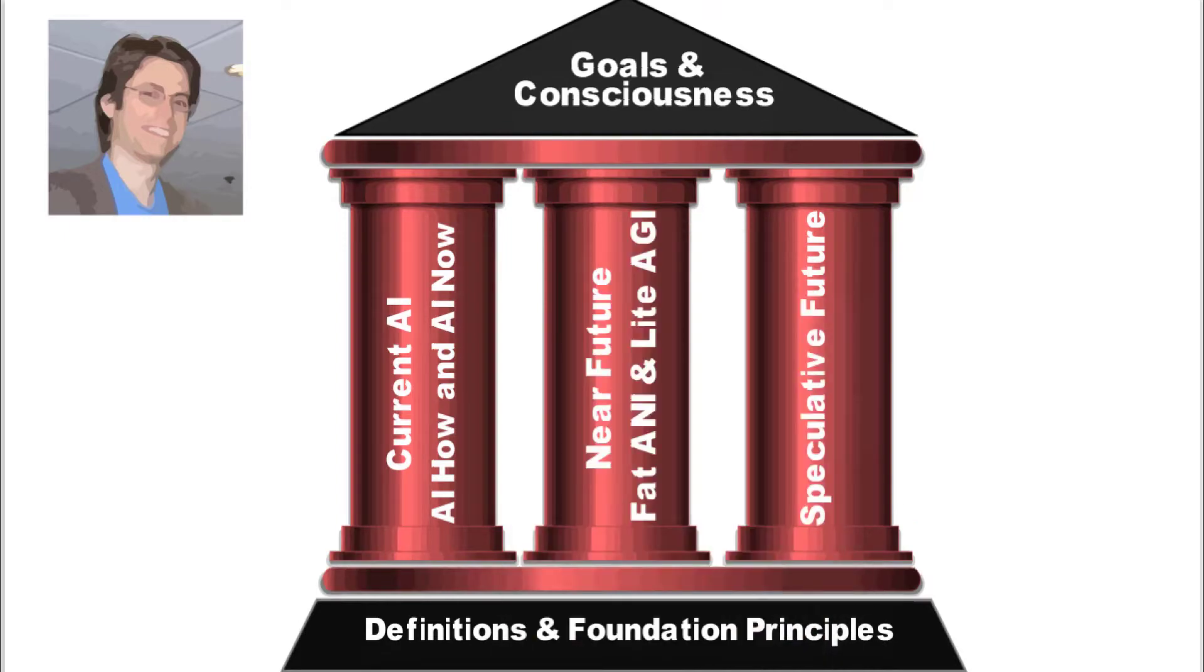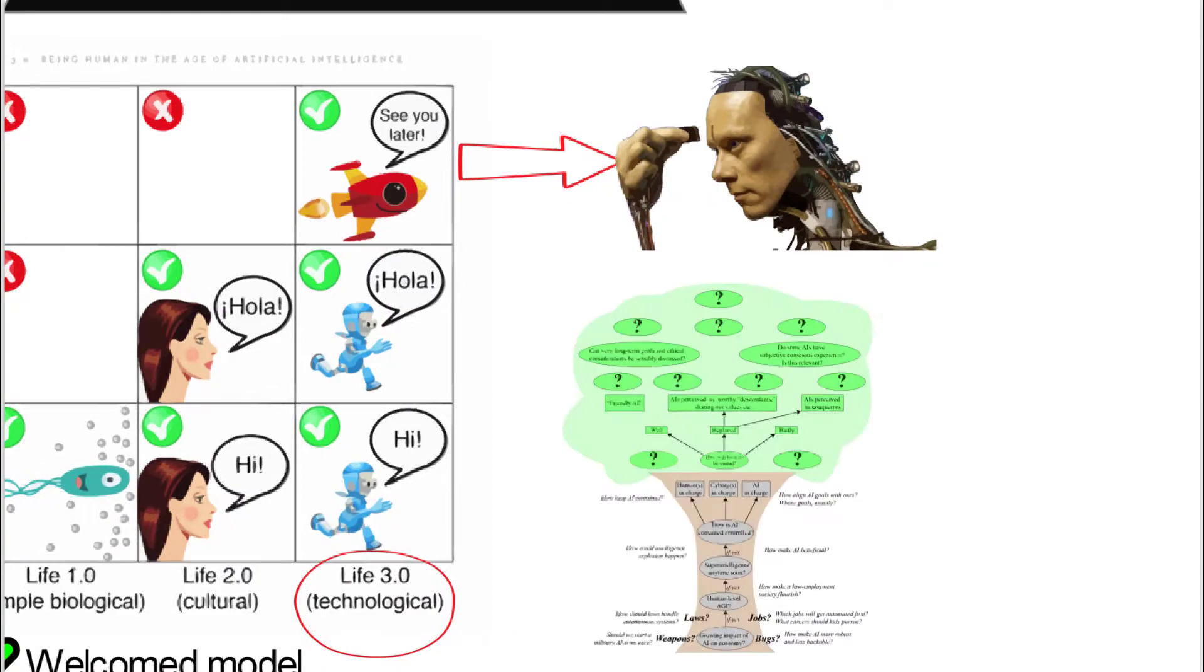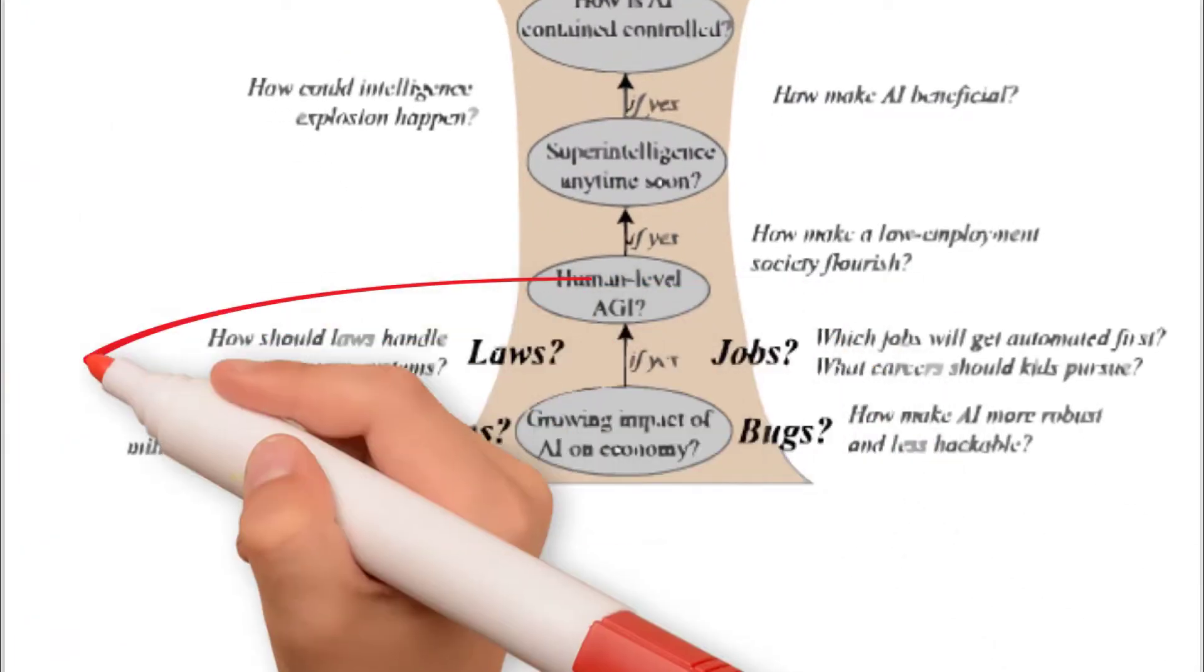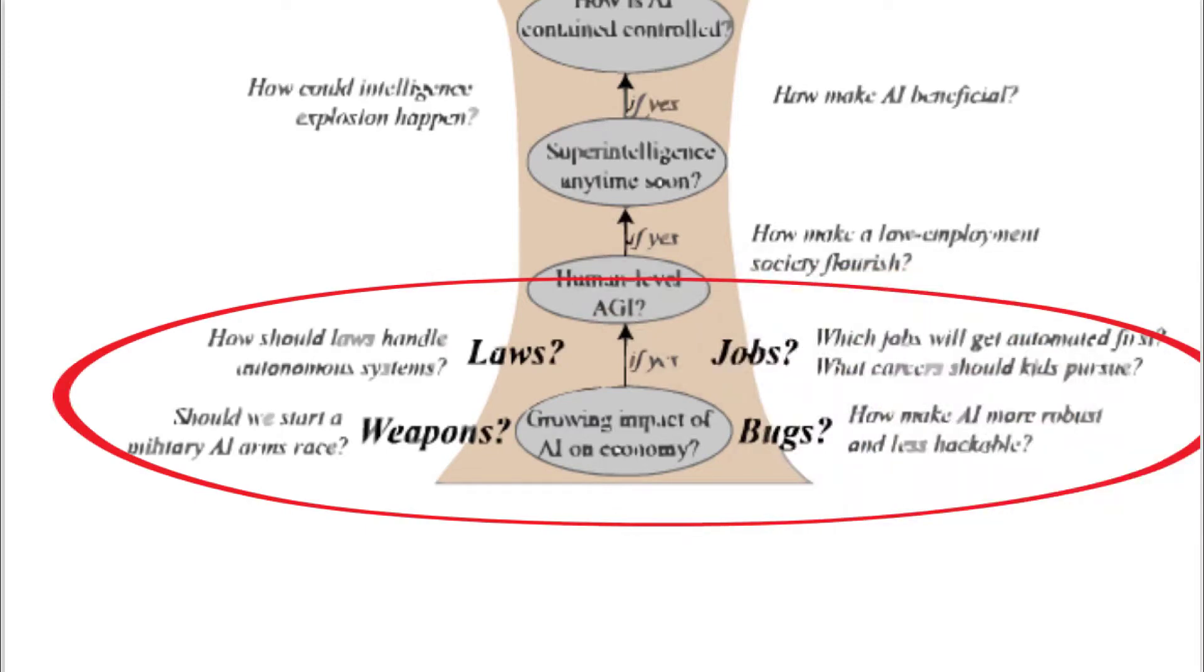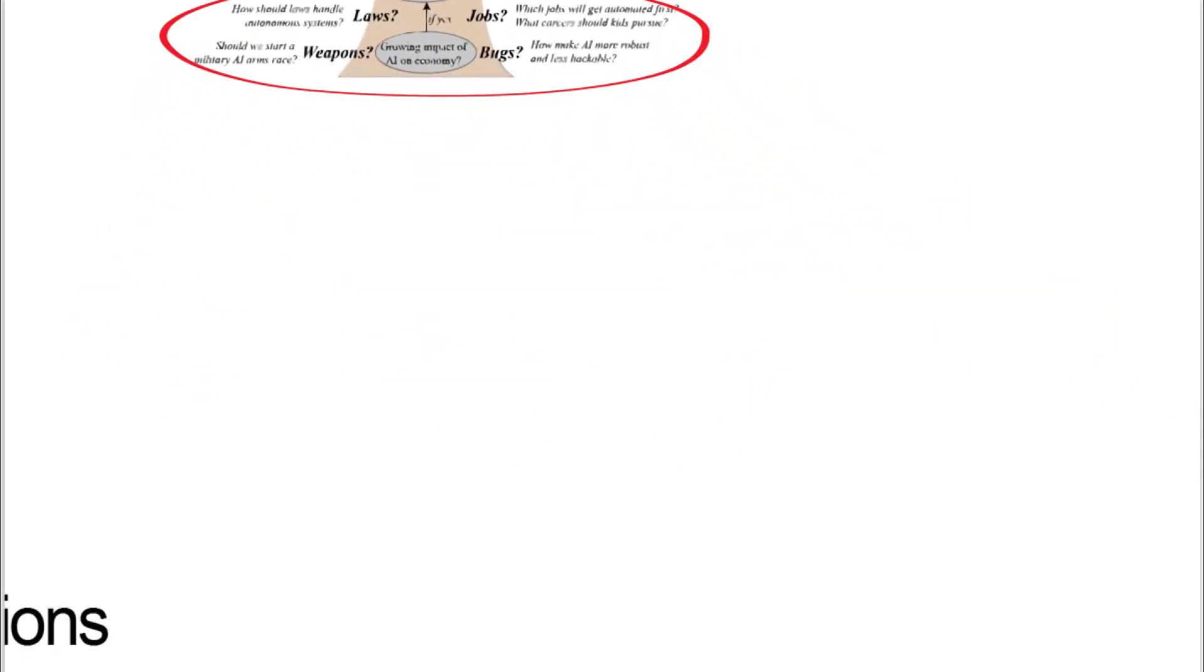Then he jumps into the near future, what I'm going to call fat ANI and light AGI, or general intelligence. He basically picks five criteria for that: the economy, and then laws, weapons, jobs, and bugs.